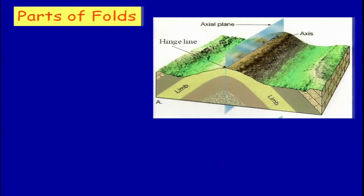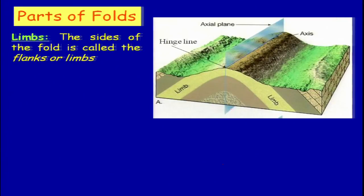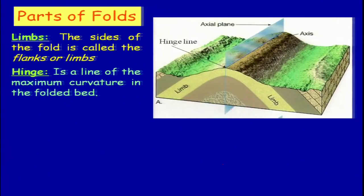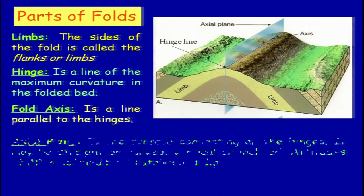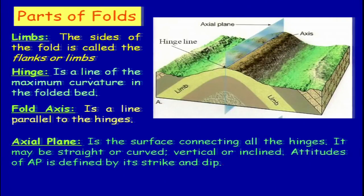Parts of folds: we have the hinge line, we have limbs, and we have the axial plane as well as the fold axis. The sides of a fold are called the flanks or limbs. The hinge line is a line of maximum curvature of the folded beds. The fold axis is a line parallel to the hinges — if you connect all the points along the hinge line, that gives you the fold axis. The fold axis may not be exactly straight or aligned in the same direction; it may curve or change direction, because in nature it is not always possible to have a completely aligned structure.